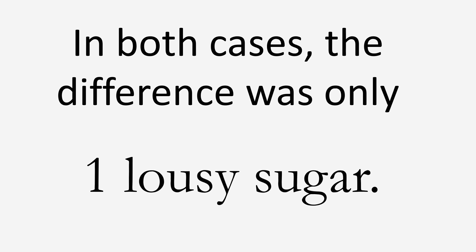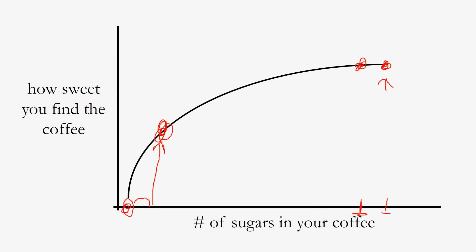In both scenarios the only difference was one packet of sugar. We can detect that one sugar when starting with no sweetness, but when starting with high levels of sweetness we can't really detect the difference. You can graph this out: starting with no sweetness and adding one packet noticeably increases perceived sweetness, but starting with a high amount, each subsequent packet produces less of an increase in subjective experience.